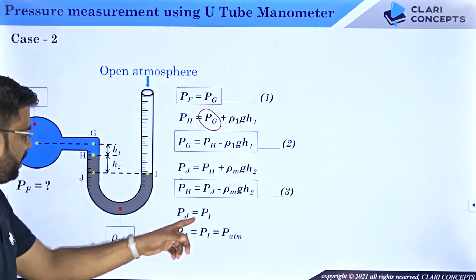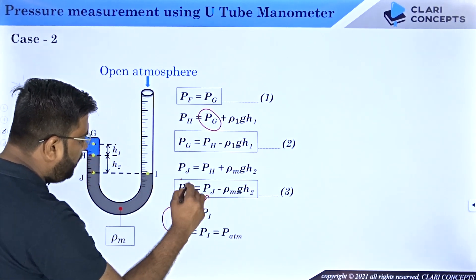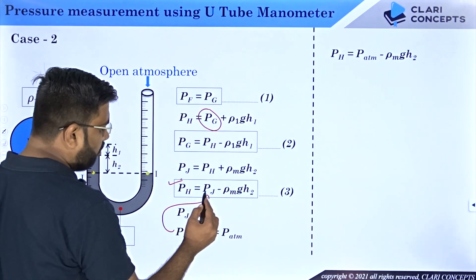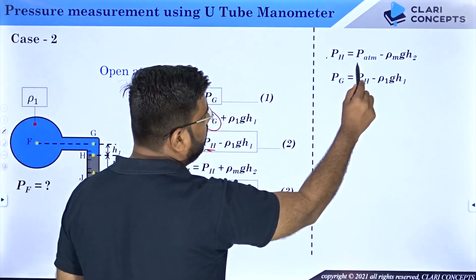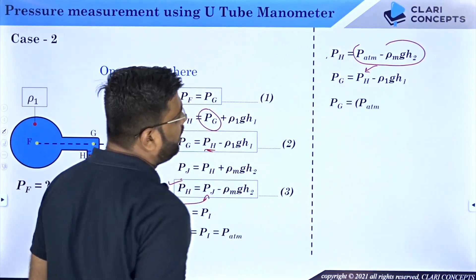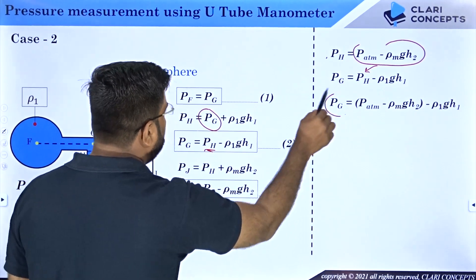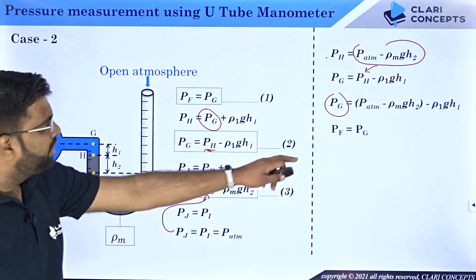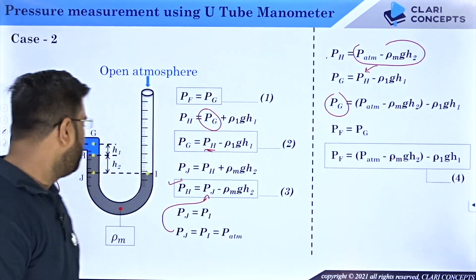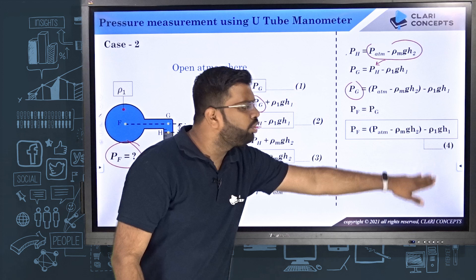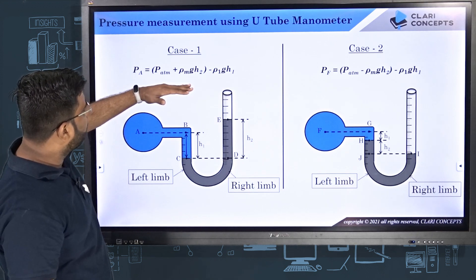P_I is atmospheric pressure, so P_J = P_atm. Therefore P_H = P_atm − rho-m × g × h2. Substituting into the expression for P_G: P_G = P_atm − rho-m × g × h2 − rho-1 × g × h1. Since P_F = P_G, the final formula for Case 2 is: P_F = P_atm − rho-m × g × h2 − rho-1 × g × h1. This covers both cases for measuring pressure using the U-tube manometer.